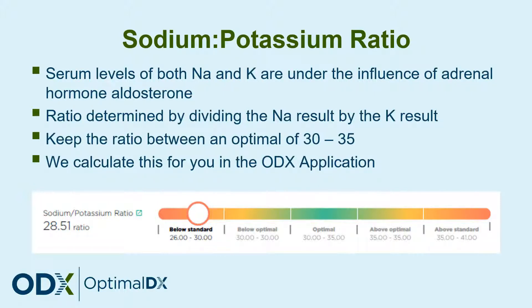It's very easy to calculate. You basically take the value of the serum sodium and divide it by the potassium level to get your ratio. Ideally you want to keep the ratio between an optimal of 30 to 35.